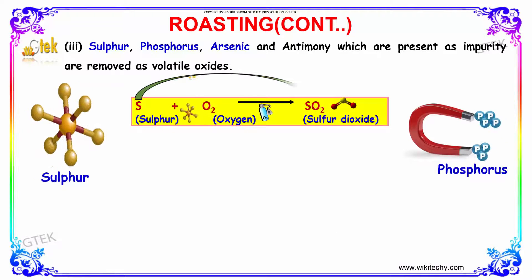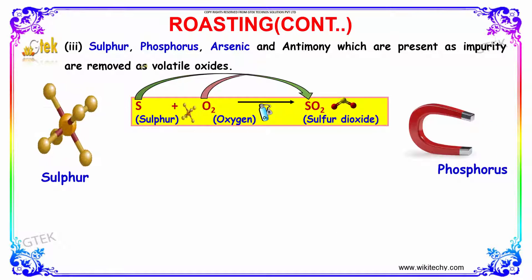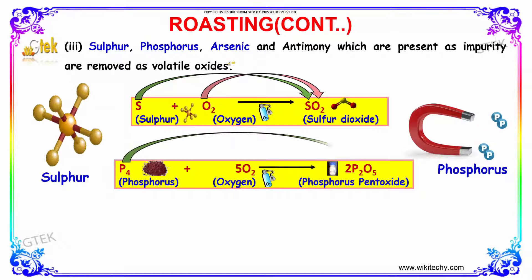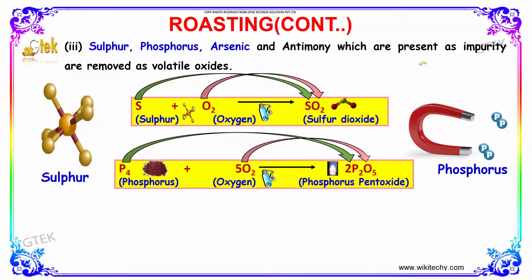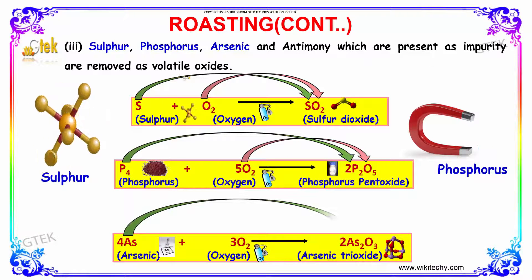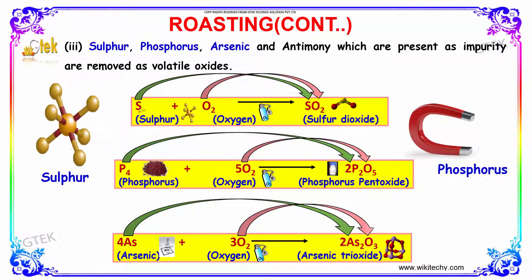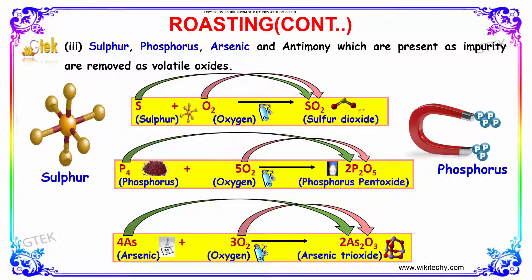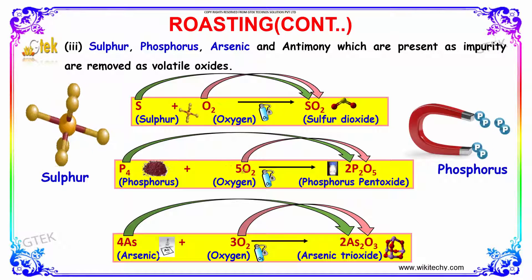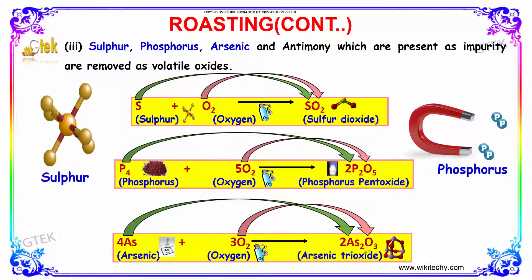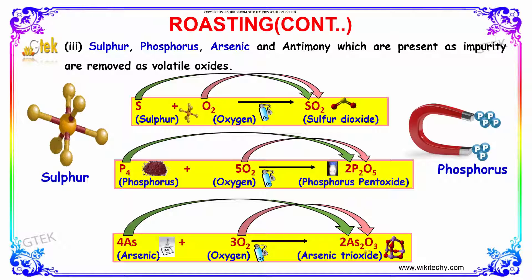In the roasting process, sulfur, phosphorus, arsenic, and antimony which are present as impurities are removed as volatile oxides. Sulfur plus oxygen gives sulfur dioxide; phosphorus plus oxygen gives phosphorus pentoxide; arsenic plus oxygen gives arsenic trioxide.